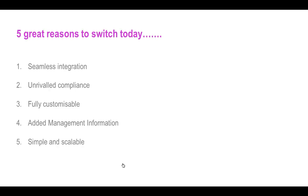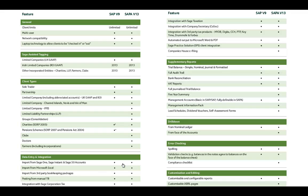Finally, here at Sage we like to keep things simple but also scalable. Our software is flexible and easy to use, and our accounts production range provides you with a choice of solutions that can be tailored depending on your practice and client requirements. We offer two accounts production packages: Sage Accounts Production, otherwise referred to as SAP, with version 9 being the latest release, and Sage Accounts Production Advanced, now on version 13. I will make this comparison table available at the end of today's session, providing a detailed breakdown of the functionality available in both offerings.